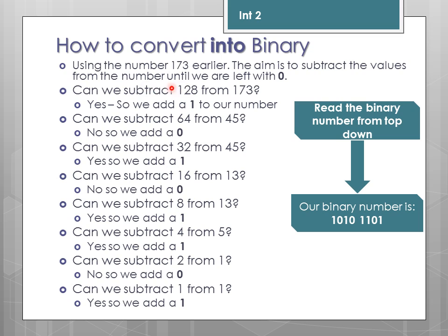So what we do is: can we subtract 128 from 173? Yes! So our first binary digit is a 1, and we subtract 128 from 173, leaving us with 45. Can you subtract 64 from 45? No! So the decimal number remains unchanged and our second binary digit is a 0. So far we have 1, 0. Can we subtract 32 from 45? Yes! So our next binary digit is a 1, and we subtract 32 from 45, leaving us with 13. Can you subtract 16 from 13? No! So our next binary digit is a 0.